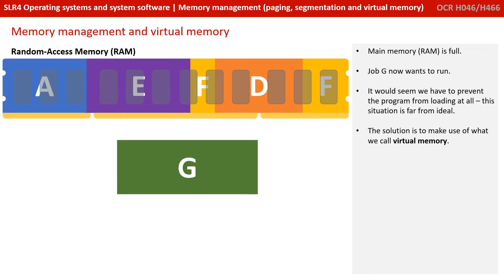After a while, it's perfectly reasonable to have a situation where main memory has become full, as is shown here. Job G ideally would like to run, and it would seem we have to prevent the program from loading at all. This situation is far from ideal. The solution is to make use of what we call virtual memory.